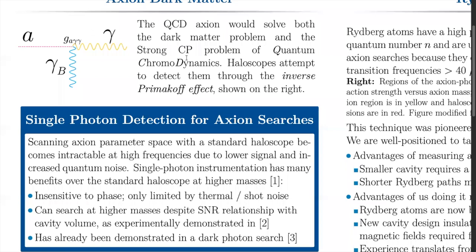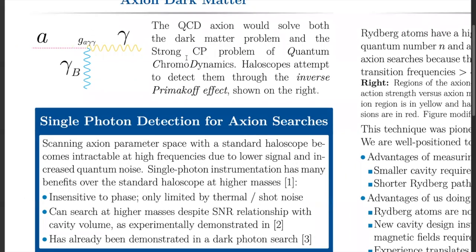Axions are a dark matter candidate that simultaneously solves a strong CP problem in quantum chromodynamics. The simultaneous solving of two big problems in physics makes the axion well-motivated, so there has been a lot of interest in searching for this particle.